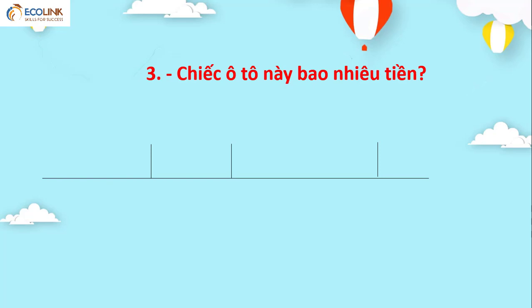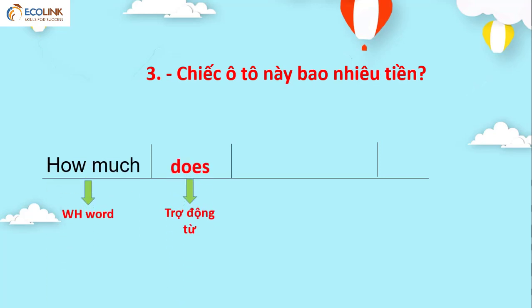Vậy ta có: How much does this car cost? Rất là dễ. Nhưng các bạn phải chú ý là khi nào số ít, khi nào số nhiều, để chúng ta dùng trợ động từ cho đúng.